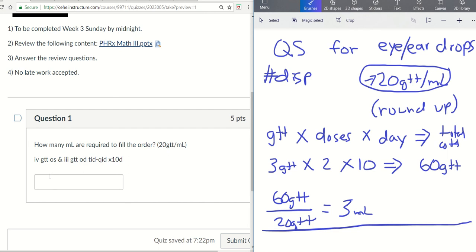For this next example, we've got the AND again. So just remember, you've got to add the total number of drops per dose in both eyes, left and right, before you multiply by the number of doses per day. So this one's not too bad. If you have this one, give it a try.